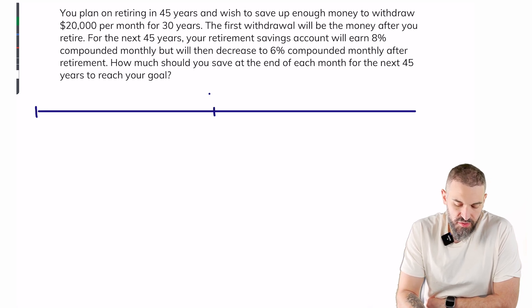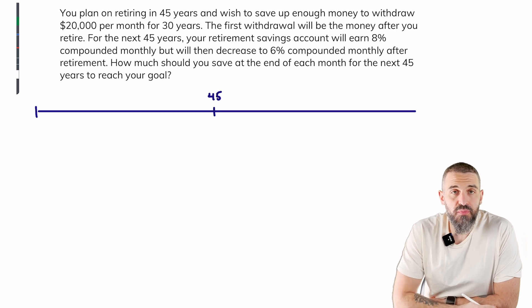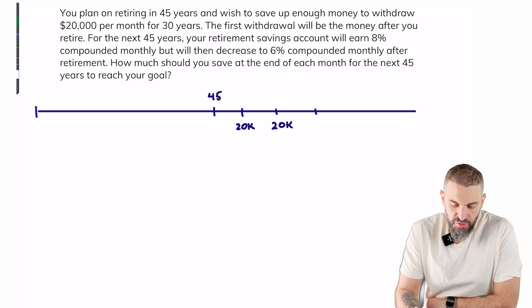So I know that in 45 years we're going to retire, and after that we're going to start withdrawing $20,000 every month for a total of 30 years. So 12 times 30, there are going to be 360 withdrawals.